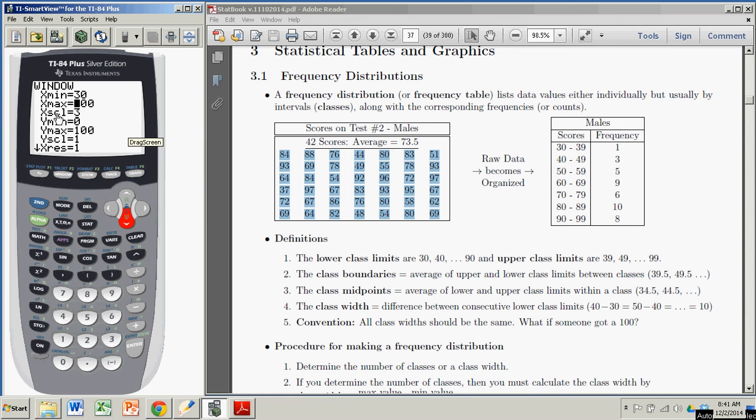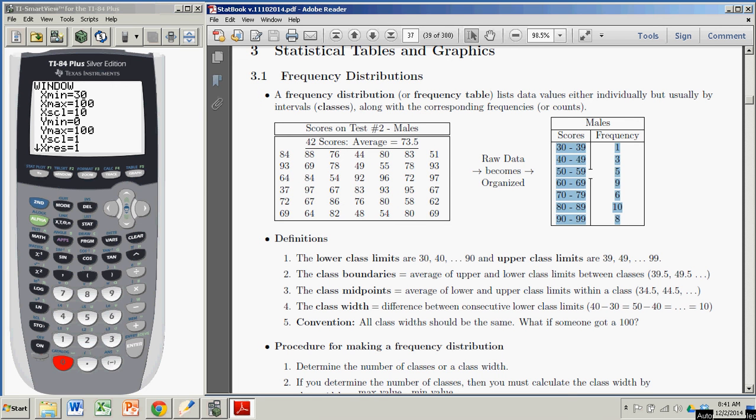xscale—this is where the difference is. The xscale is actually the class width. If I'm starting at 30 and have an xscale of 3, it's going to go 30, 33, 34 to 37. I'm going to change xscale to 10, so I go 30 to 40, 40 to 50. That way I get the classes that look like this.